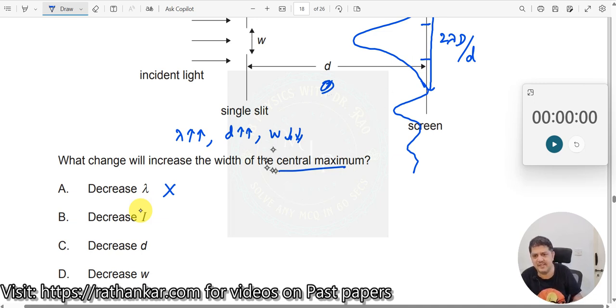So, therefore, it would not increase based on this. So, this is also incorrect. Decreasing the value of d. But you should actually increase the value of d. So, this is also incorrect. Decreasing the value of W. This is the right option. So, therefore, d is the right option.